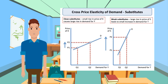Graphing XED for substitutes: for close substitutes, a small rise in the price of X causes a large rise in demand for Y. For weak substitutes, a large rise in the price of S leads to only a small increase in demand for T.